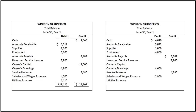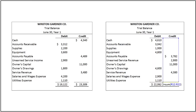There is no change in owner's capital and utilities expenses. After making all corrections, we determine the totals of the debit and credit columns, which equal $22,062. Since the total of debits and credits are equal, this trial balance is mathematically accurate.